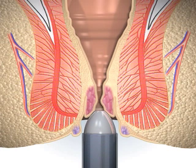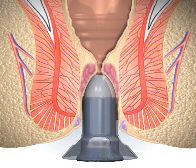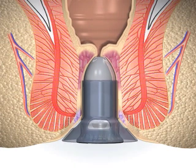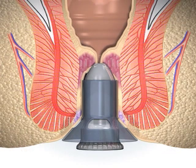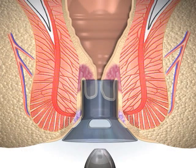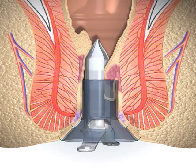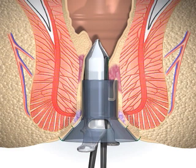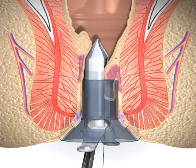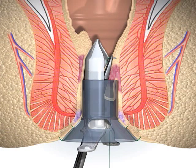The obturator is then removed, and the circular anal dilator with the obturator in place is inserted. The obturator is then removed. Rotating the anoscope while it is fully inserted in the circular anal dilator can twist the mucosa and cause an improper asymmetric purse string suture.